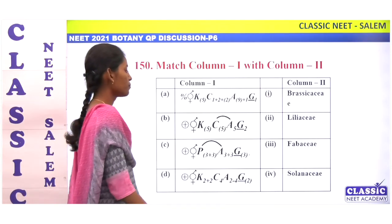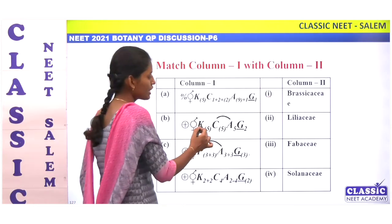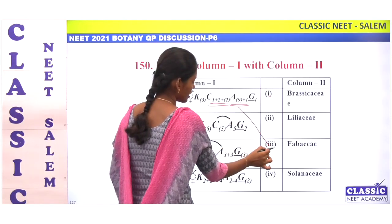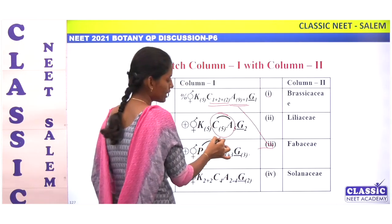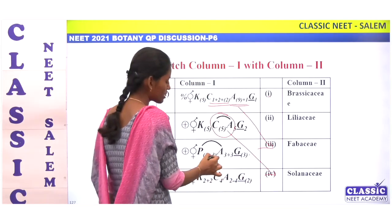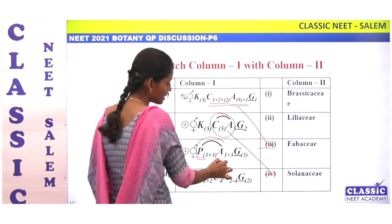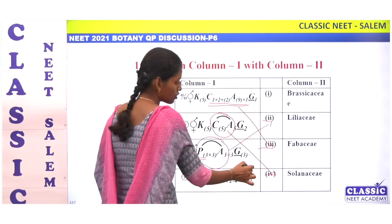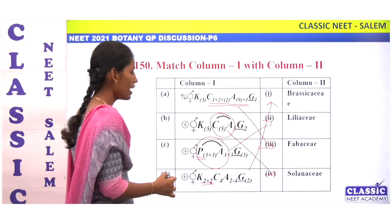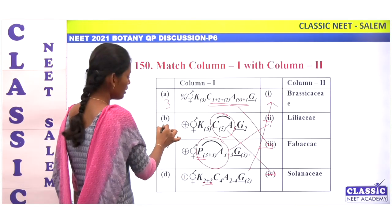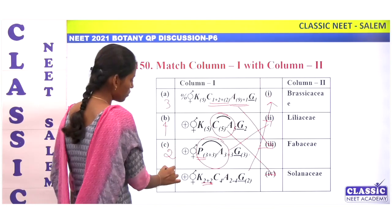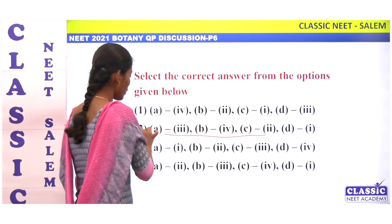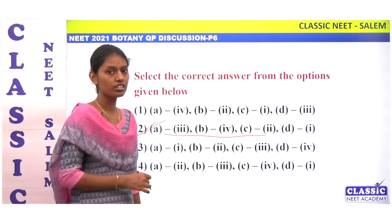Next match floral formula with family. Diadelphous condition with vexillary aestivation — characteristic of Fabaceae — A is 3. Epipetalous condition — that is Solanaceae — B is 4. Perianth with epiphyllous condition — Liliaceae — C is 2. Tetramerous — Brassicaceae — D is 1. Match is 3, 4, 2, 1. Option 2.